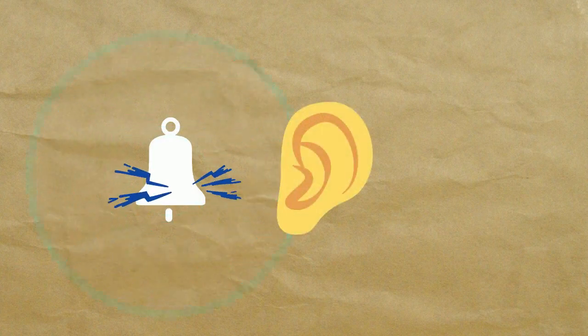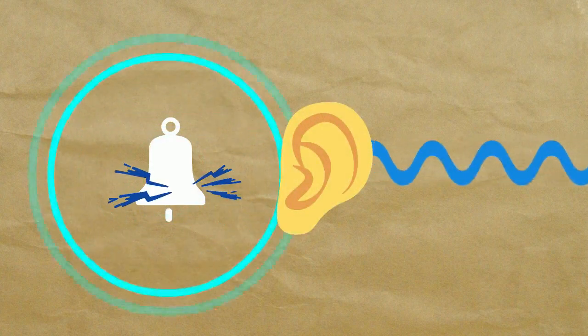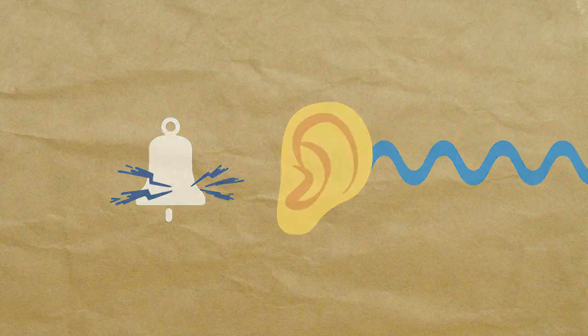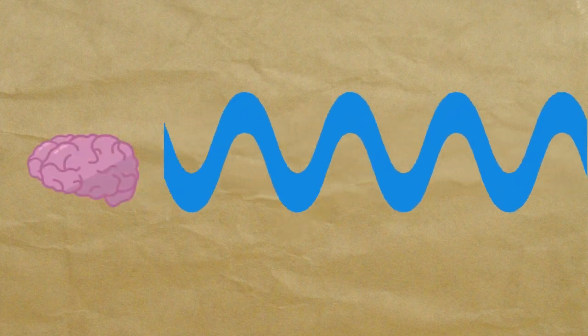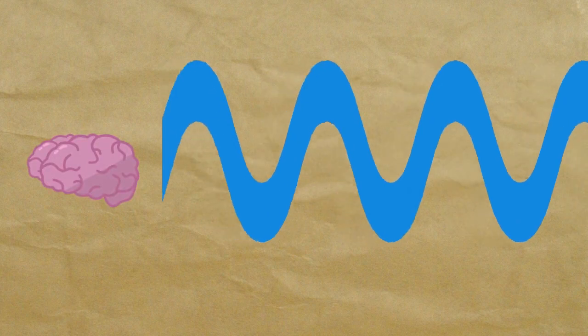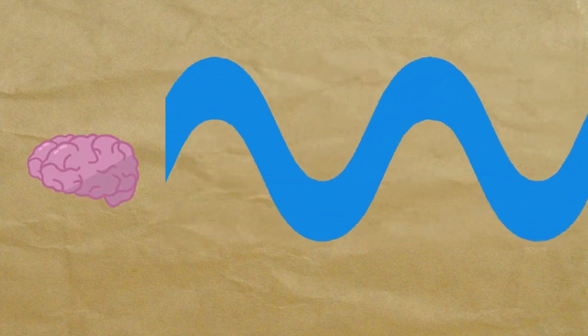Sound at its most basic level is an object vibrating and making ripples or waves in the air around it. Our ears capture these waves and interpret them as the sounds we hear. Our brain interprets these waves based on their amplitude (how loud they are) and their frequency (their pitch).